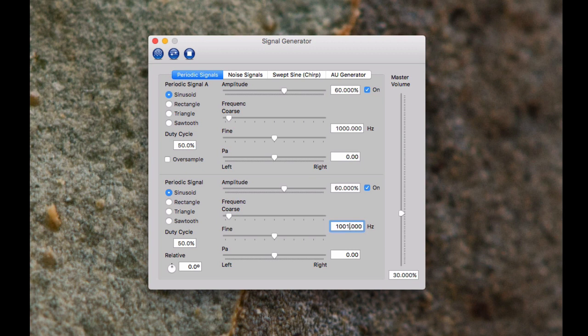If I change the beat frequency to say one hertz, now it's turning on and off at a frequency of one hertz. And again, the carrier underneath is the average of these two frequencies, which is a thousand point five hertz in this case.